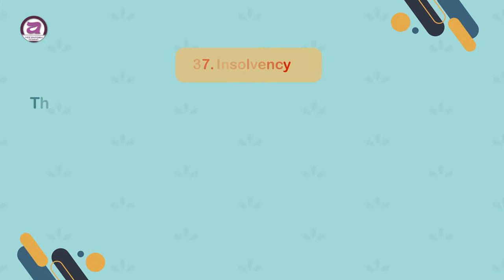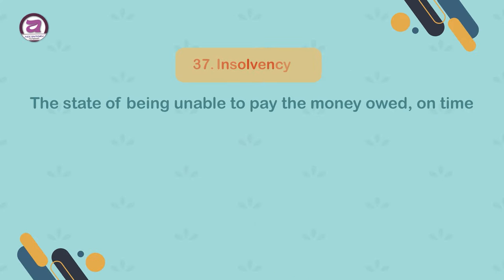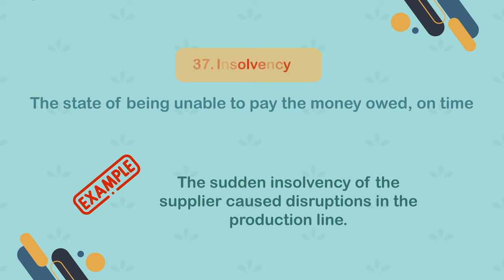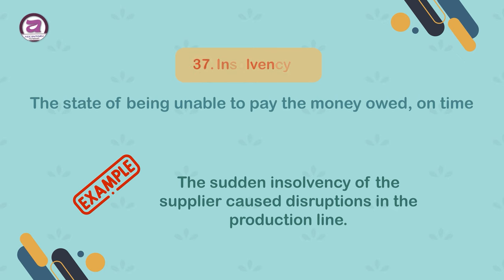37. Insolvency. The state of being unable to pay the money owed on time. Example: the sudden insolvency of the supplier caused disruptions in the production line.